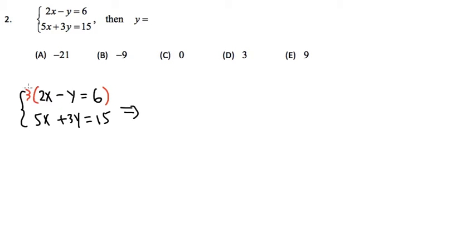Anyways, for the first one right here, don't forget to distribute the 3 into everything right here. And as we can see, 3 times 2x, that will give us positive 6x, 3 times negative y, that gives us negative 3y, and then 3 times 6, that's 18. But this was an equal sign, so I also carry out the equal sign right here. So that's pretty much the change that we did for the first equation.